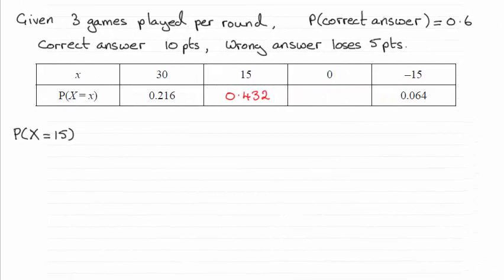Hi there. For this first part of the question, we're asked to show that the probability of scoring 15 points in a round is 0.432. The way we do this is to think about all the different combinations we can get that give us 15 points.